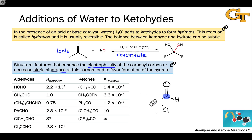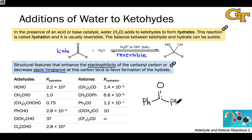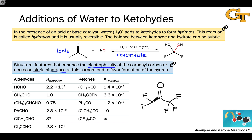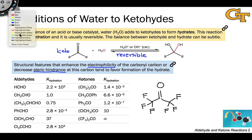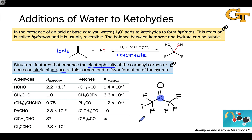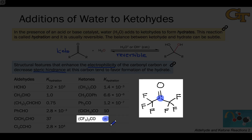Moving to ketones, values of K are generally much smaller due to steric hindrance from the two alkyl groups around the carbonyl carbon rather than one as in aldehydes. For example, benzophenone with two phenyl rings linked to the carbonyl carbon shows essentially no hydrate when dissolved in water. However, electrophilicity still plays a role. Even though the hydrate of acetone is relatively disfavored, replacing the hydrogens of acetone with electron-withdrawing fluorine atoms strongly increases electrophilicity of the carbonyl carbon. Since fluorine atoms are also quite small, steric hindrance remains similar, but the strongly electrophilic carbonyl carbon facilitates hydration to the point where K is essentially infinite — the di(trifluoromethyl) ketone, (CF3)2CO, exists essentially entirely as its hydrate when dissolved in water.